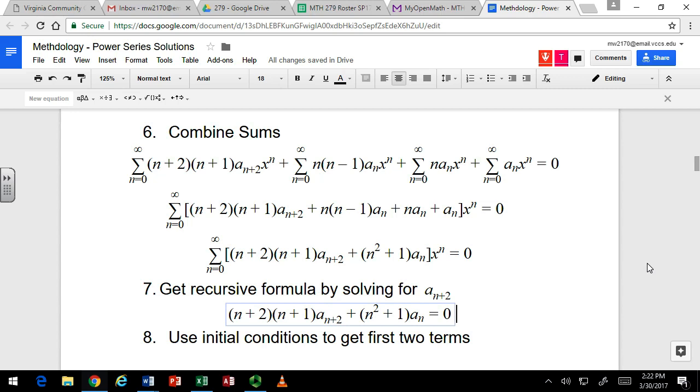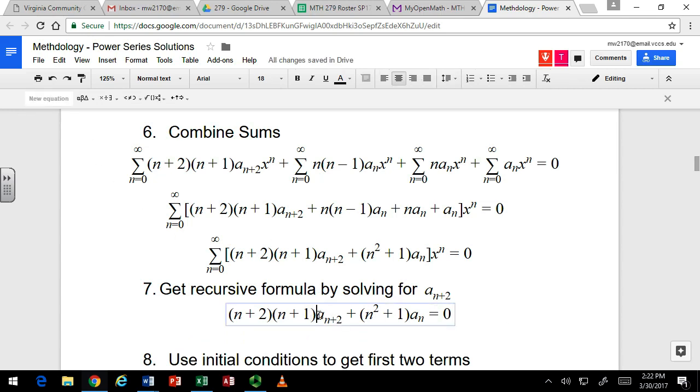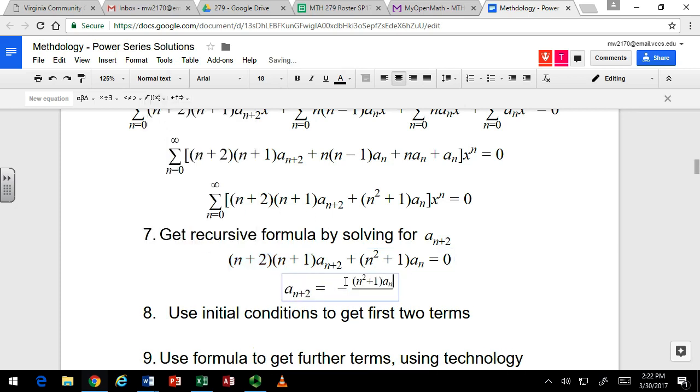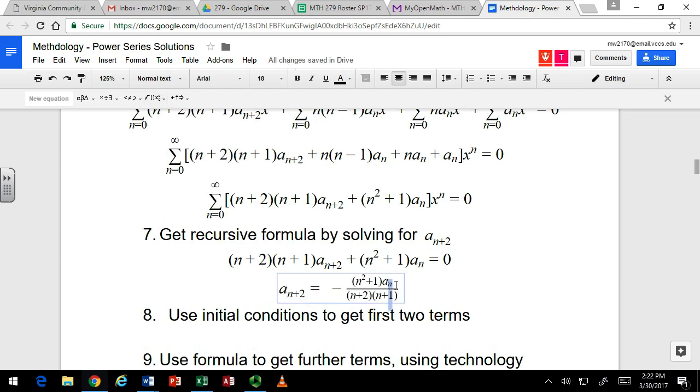Alright, this leads to recursive formulas. So recursive formula just says that one term in the sequence is based off of previous terms. So you want to solve for the latter term. In this case, a sub n plus 2. So if I solve for a sub n plus 2, what am I going to have? So I would subtract this to the other side. And then I would divide by the n plus 2, n plus 1. You can take the a sub n off the numerator there, kind of put it outside. And that's a recursive formula. So if you gave me a 0, I could give you a 2 when n is 0. So you just need to get this thing going, and it'll start turning these out. Our starting point is actually the initial conditions. Initial conditions are actually the first two terms.